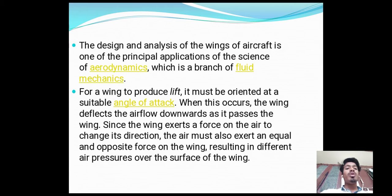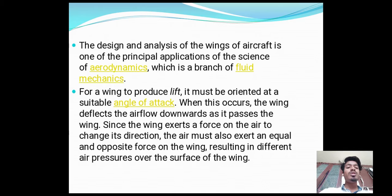For a wing to produce lift, it must be oriented at a suitable angle of attack. When this occurs, the wing deflects the airflow downwards as it passes the wing. Since the wing exerts a force on the air to change its direction, the air must also exert an equal and opposite force on the wing, resulting in different air pressures over the surface of the wing.